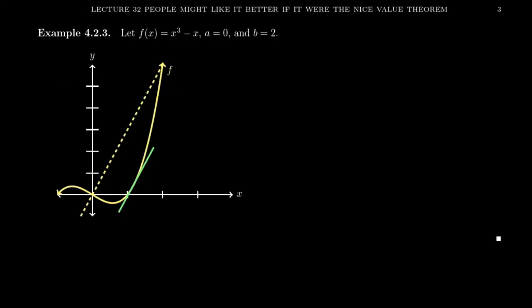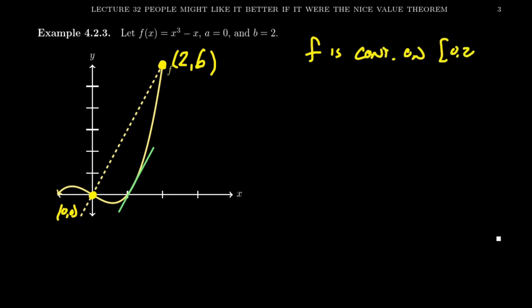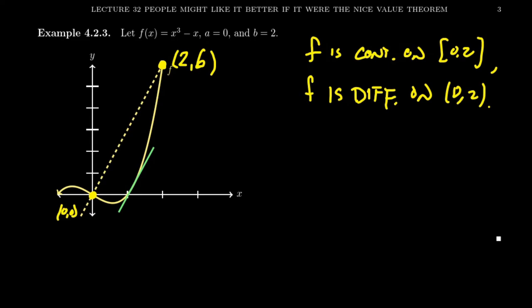Let's do an example. Let f of x equal x cubed minus x, drawn in yellow on the screen, with a equals zero and b equals two. The point at x equals zero is zero comma zero, and at x equals two: two cubed minus two equals six, so we get two comma six. Since f is a polynomial, it is continuous on the closed interval zero to two and differentiable on the open interval zero to two, so the mean value theorem applies to f on this interval.